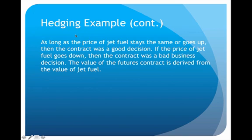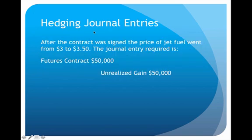As long as the price of that fuel stays at $3 or goes higher, this will have been a good decision because we locked in that lower price of $3 a gallon. But it's also possible our prediction could be wrong — maybe the price of jet fuel is actually going to go down. If that's the case, this was a bad decision because we're locked in and have to pay $3 a gallon. The value of this contract is totally derived from the underlying value of the jet fuel itself, which is why this is a derivative.